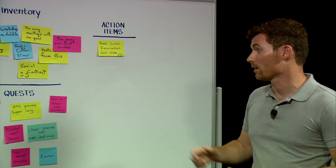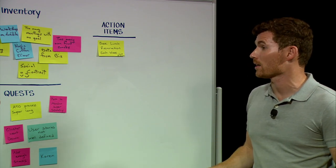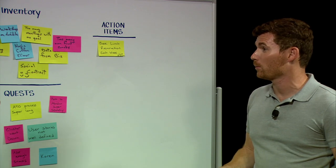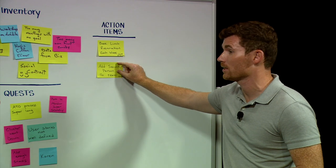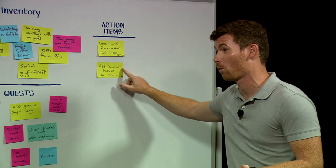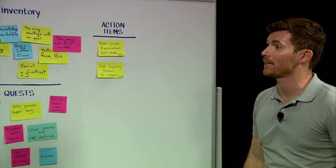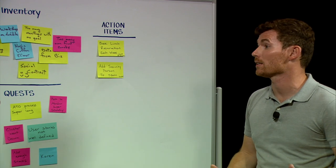You know, one of the quests that was uncovered was that there was an ATO process that was super long. So how are we going to solve that? How can we turn that into an action? Well, maybe that means we're going to add a security person to the team for the next sprint, or maybe going forward permanently, and we'll make sure that that gets assigned to somebody too, to ensure that it's completed.